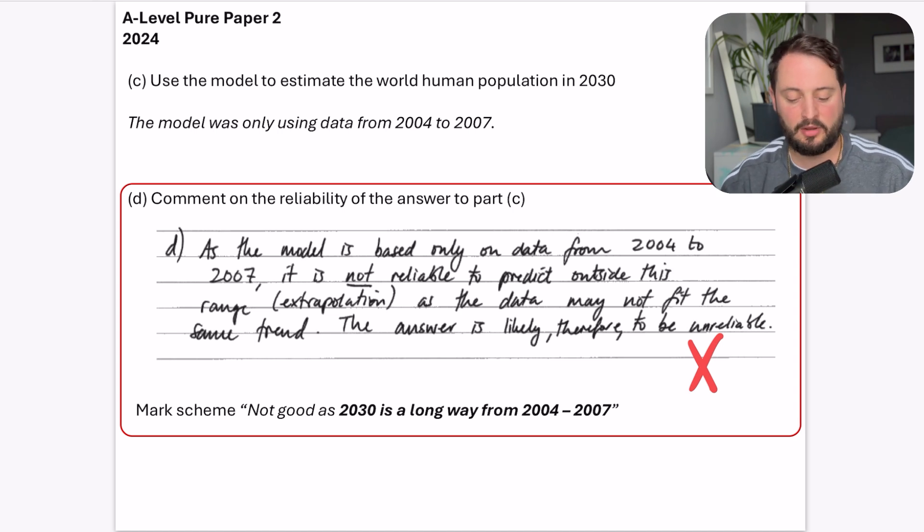This is what I wrote: as the model is only based on data from 2004 to 2007, it is not reliable to predict outside this range extrapolation, as the data may not fit the same trend. The answer is likely therefore to be unreliable. You can see I sort of write as much detail as I can, but it still didn't work. I still did not get this mark.